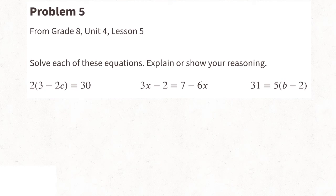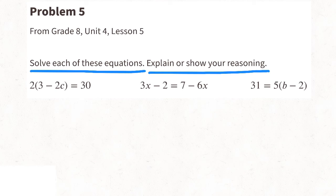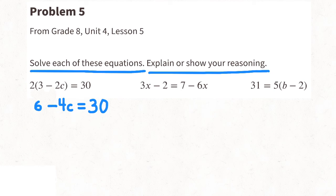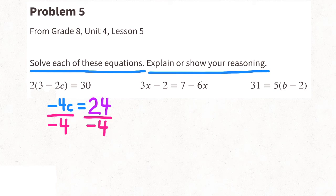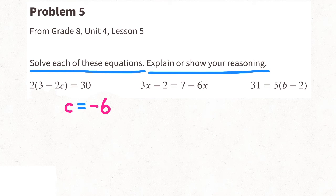Problem number five from 8th grade Unit 4, Lesson 5: solve each equation and explain your reasoning. For the first equation, 2 times 3 is 6 and 2 times negative 2c is negative 4c, giving 6 minus 4c equals 30. Subtract 6 from both sides, then divide both sides by negative 4. A negative divided by a negative is positive, leaving c equals negative 6.